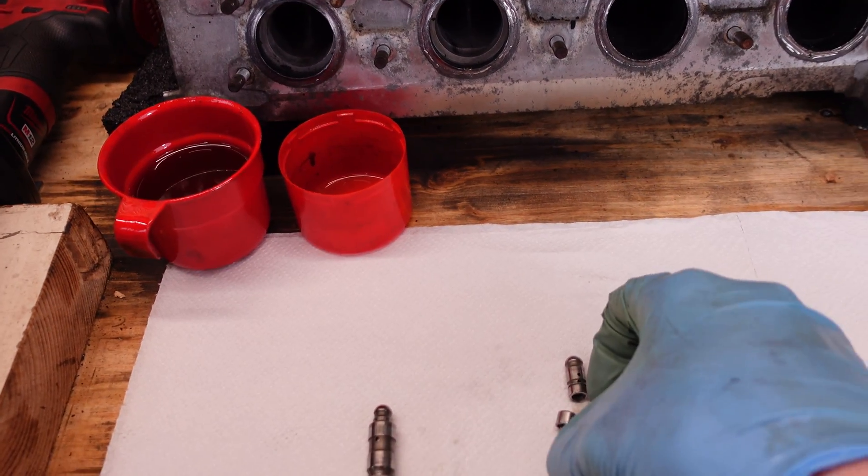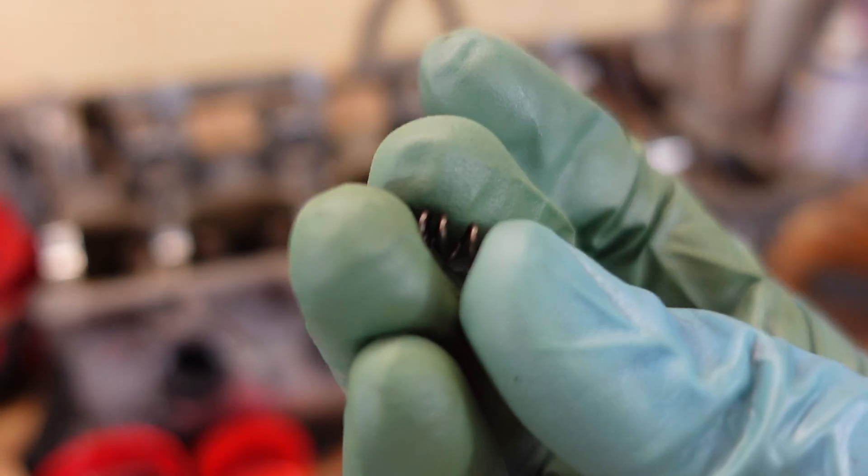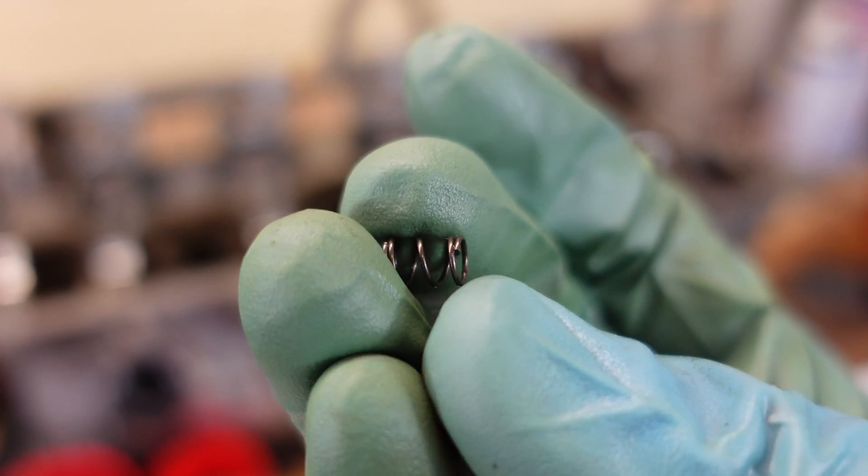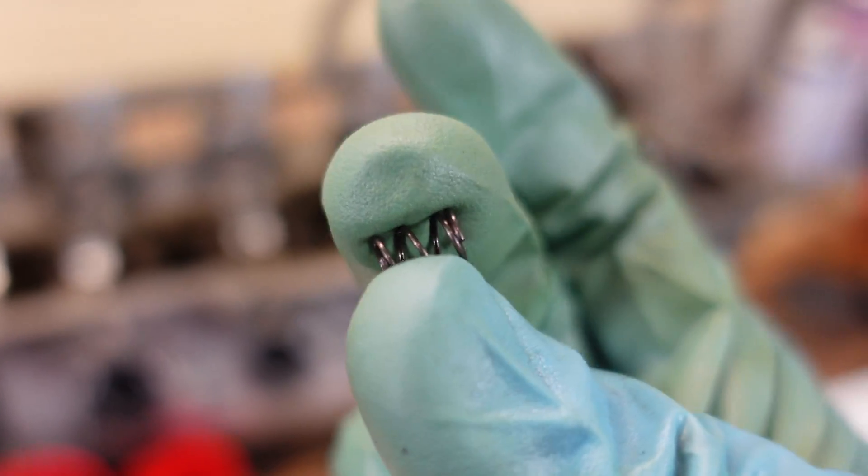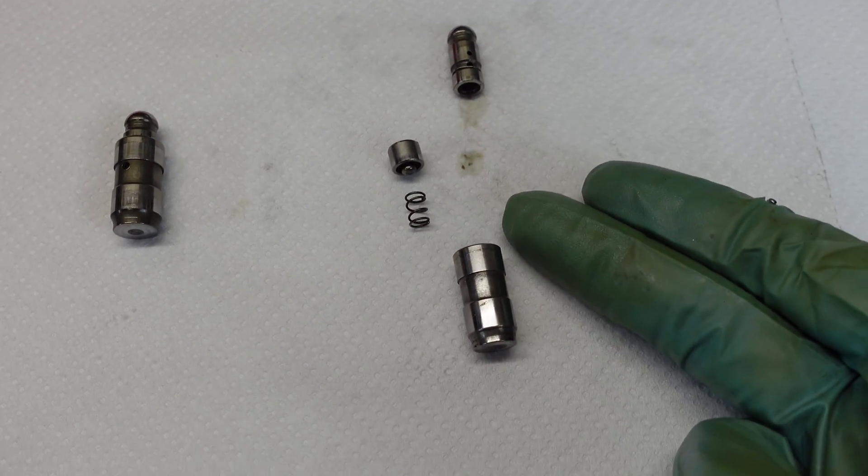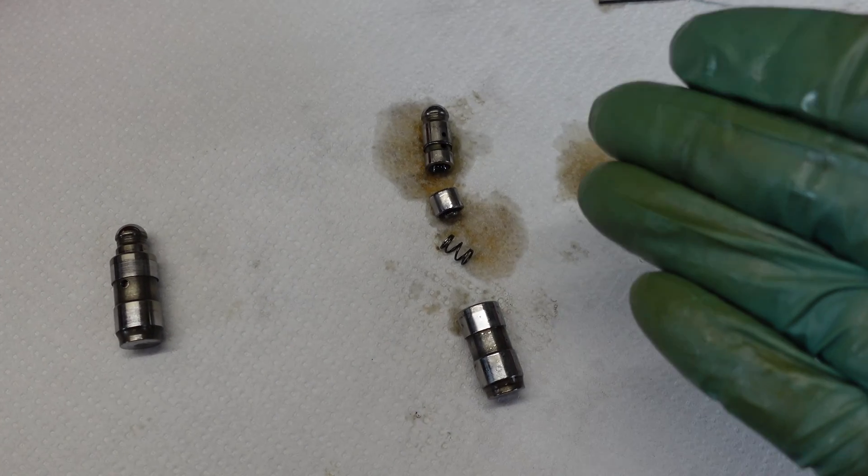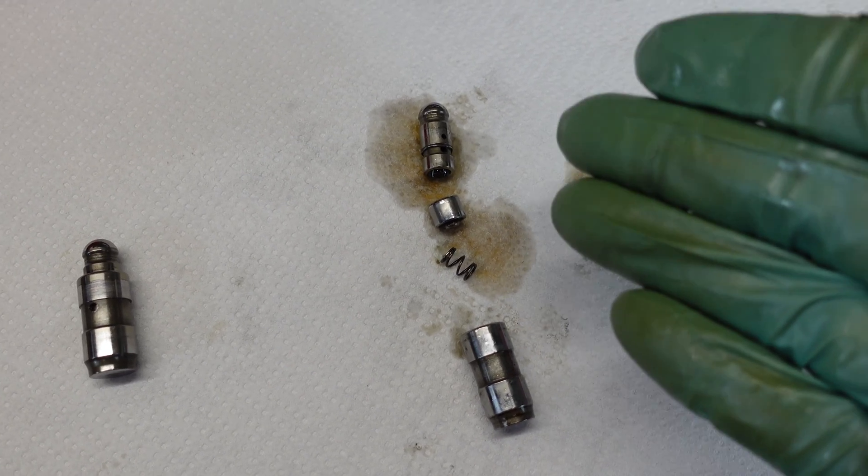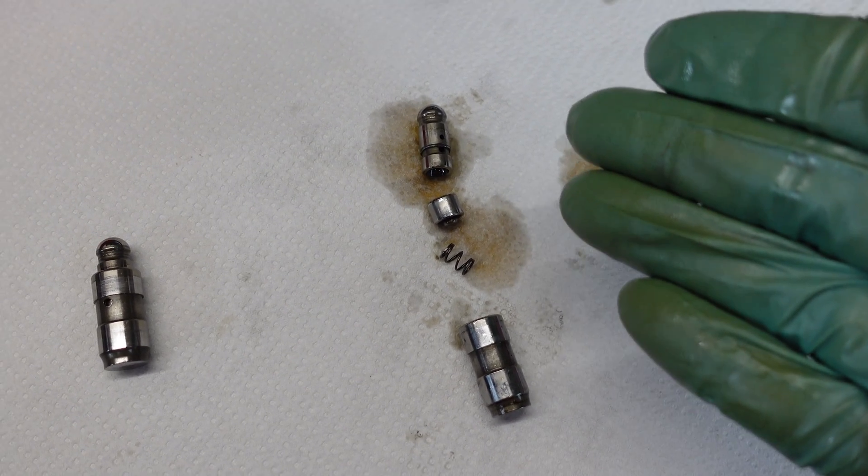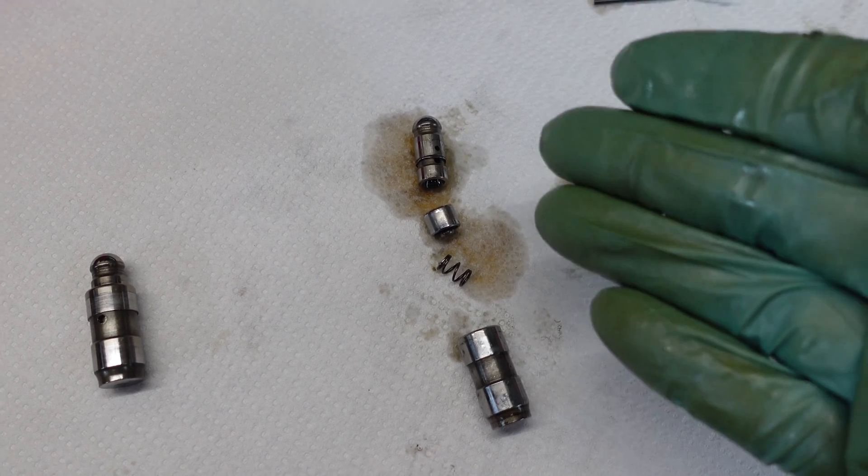And then in between there's this little spring. And the function of this little spring is to keep the lifter in fully extended position. So this is how everything looks like on the inside. You really should not disassemble the lifters. Because it's kind of hard to get it back together without damaging it. So this is only for YouTube purposes.